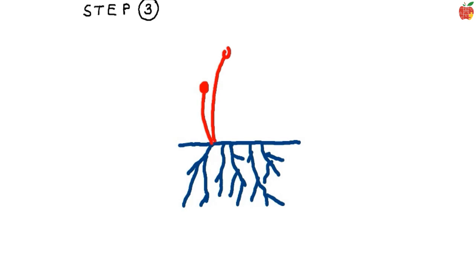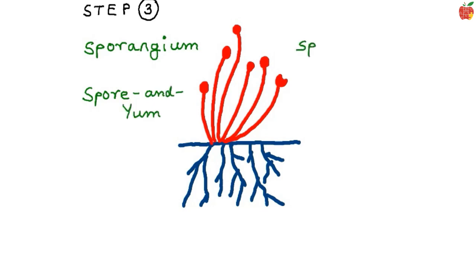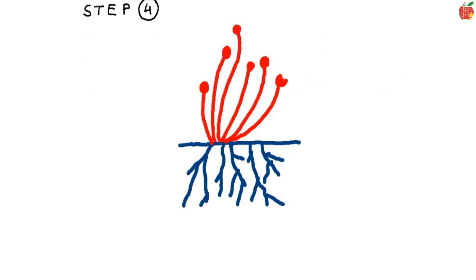Step 3: draw curved lollipops of different heights like how I am doing here. Draw a half-eaten lollipop on this side. The lollipops are known as the sporangium — remember as 'spore and yam' — and the sticks as sporangiophore. Remember: make it a rule that you have to add a G after 'and' in both cases. Coming back to the half-eaten lollipop, make little dots out here.